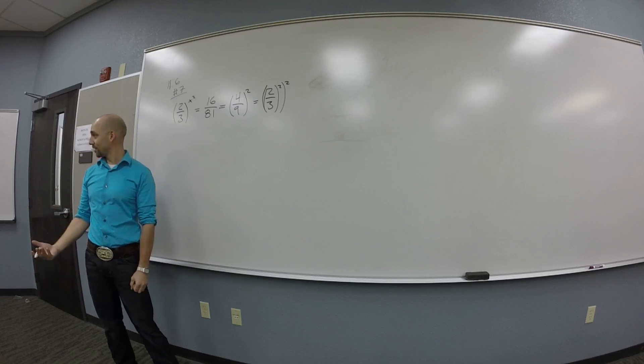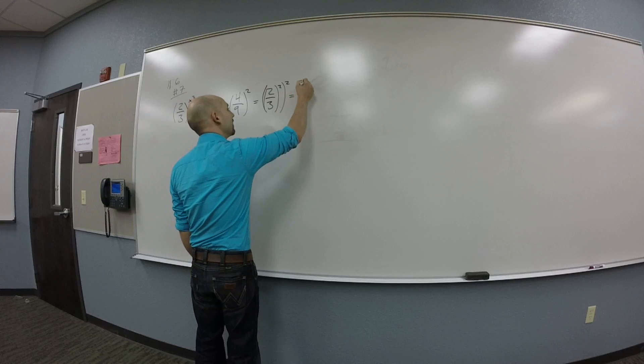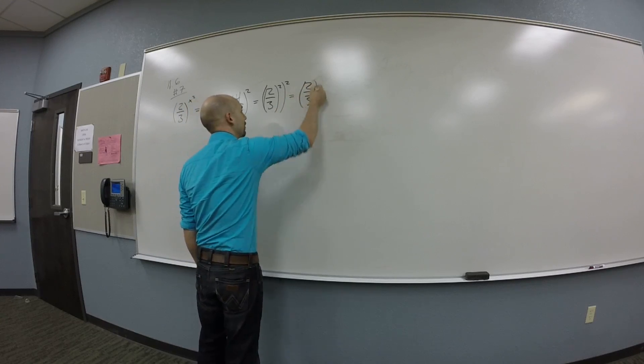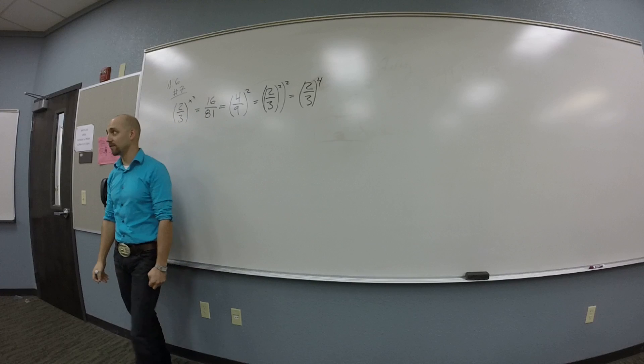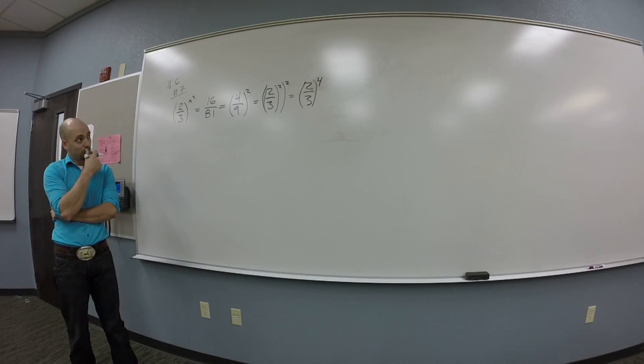It turns out that it doesn't matter, right? Because it's 2's. So this is 2/3 to the 4th. The right answer was multiply them, but it doesn't matter in this case. Okay. So now what?